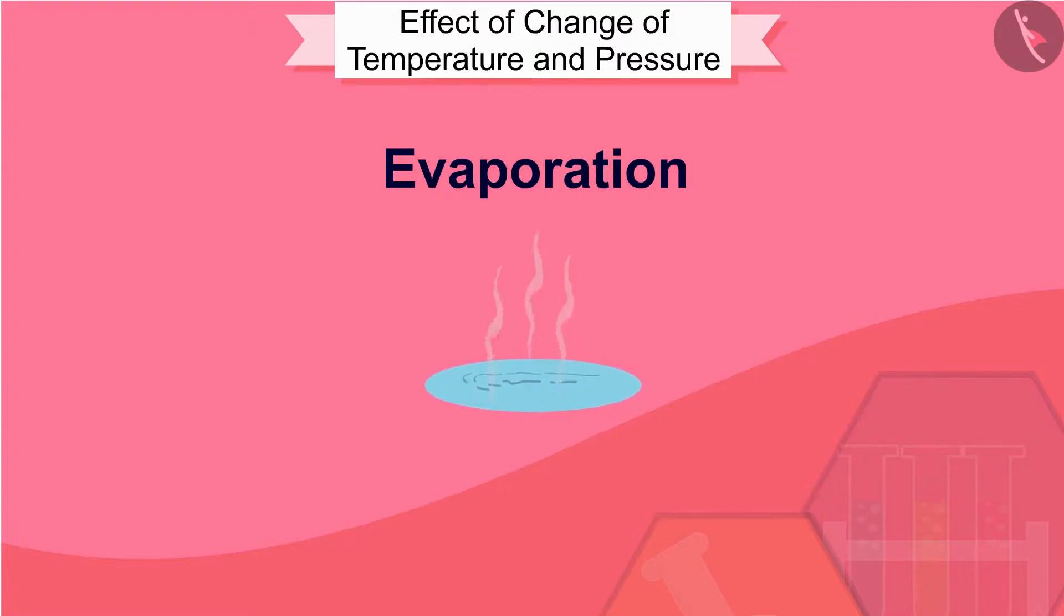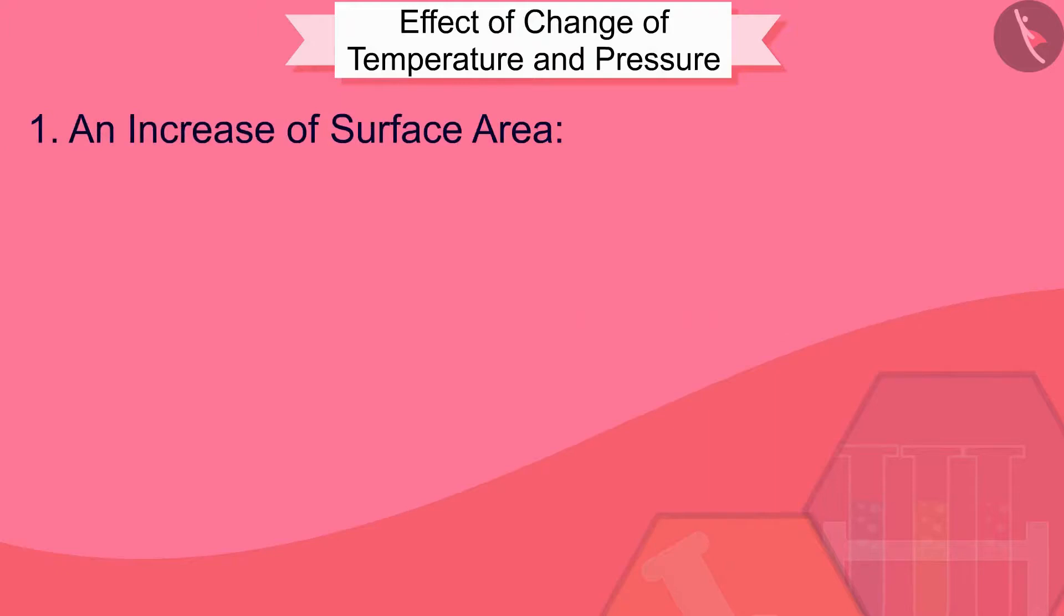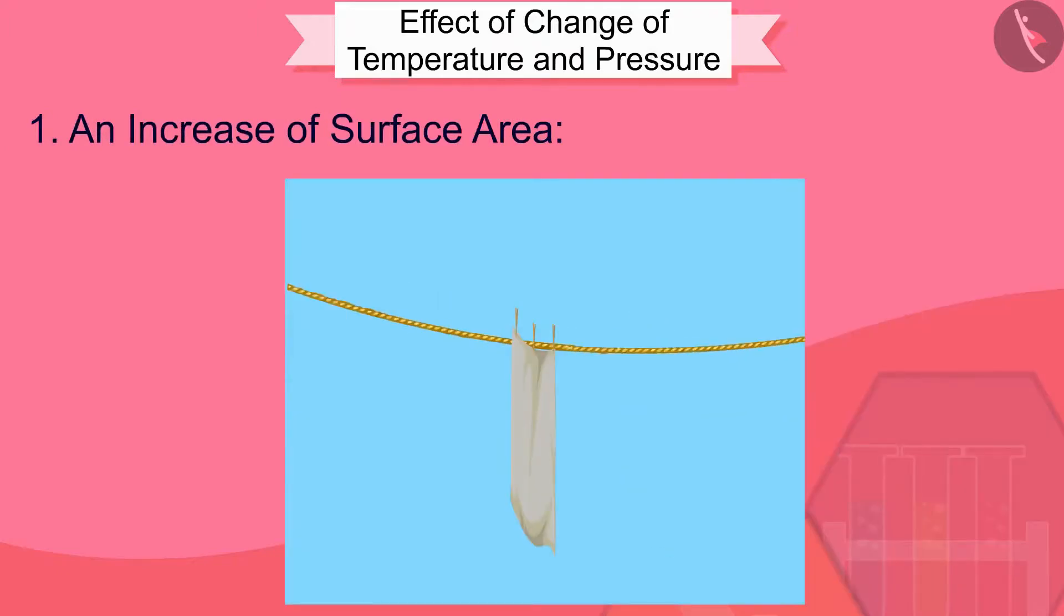Let us see what are the factors affecting evaporation. The rate of evaporation increases with the following: an increase of surface area. We know that evaporation is a surface phenomenon. If the surface area is increased, the rate of evaporation increases. For example, while putting clothes for drying up, we spread them out.